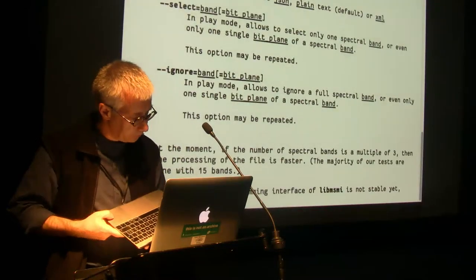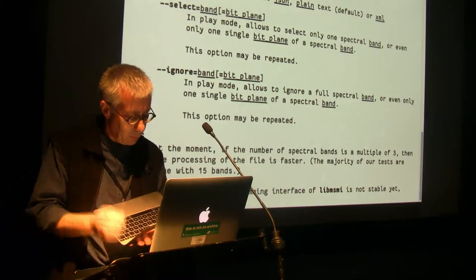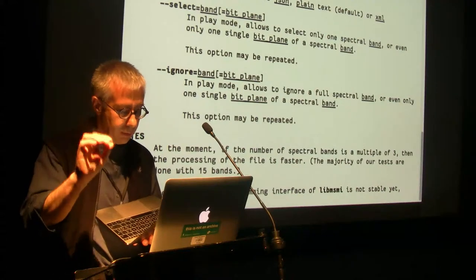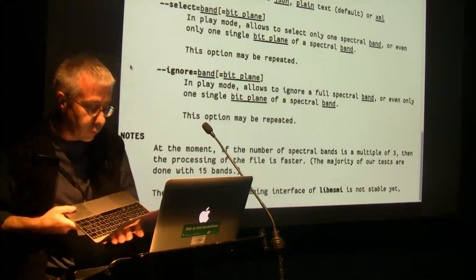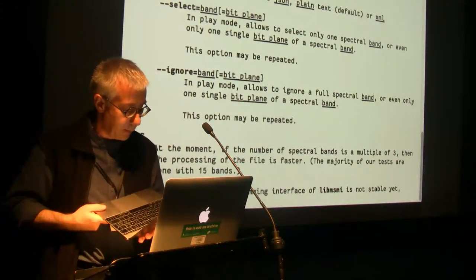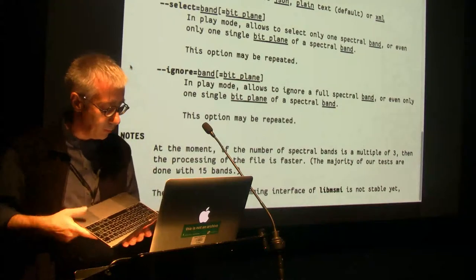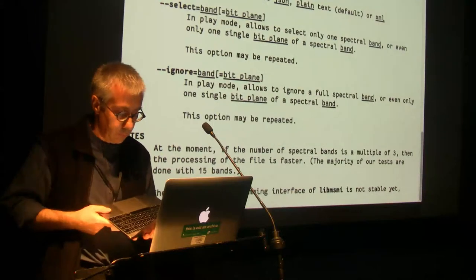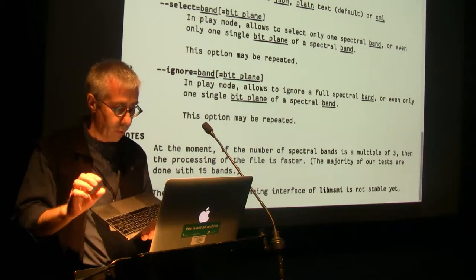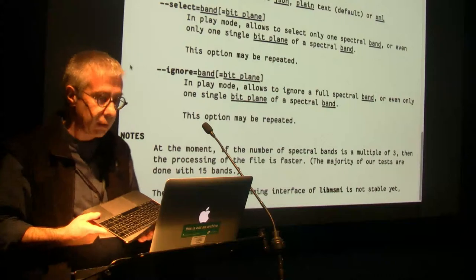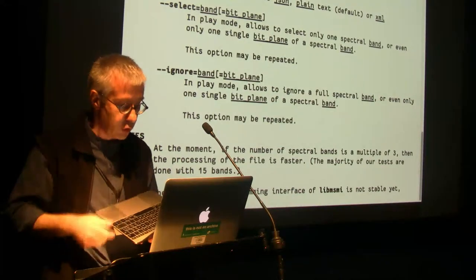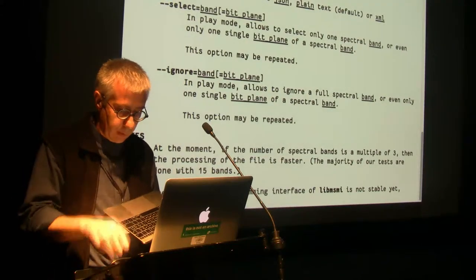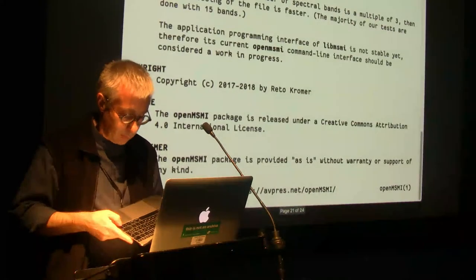The possibility to select just one band or specifically one bit plane inside a band is a very useful thing. For instance, in a 16-bit workflow I can check whether all steps are really 16-bit, because too often I have seen workflows that at some point drop to 12-bit. You can check if in the higher bits you have real information or just noise — which is also done in QCTools, as was mentioned.